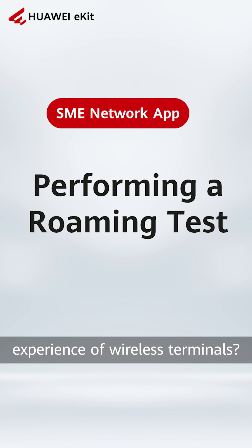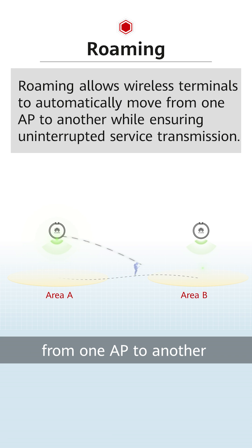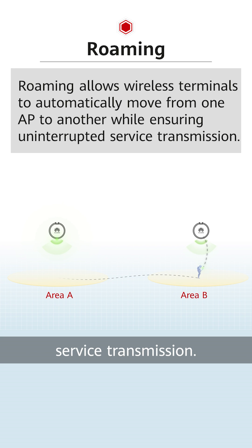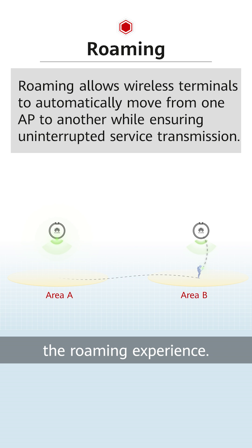How do we test the roaming experience of wireless terminals? Roaming allows wireless terminals to automatically move from one AP to another, while ensuring uninterrupted service transmission. The app supports the roaming test function. Now, let's see how to test the roaming experience.